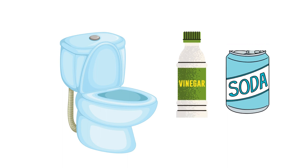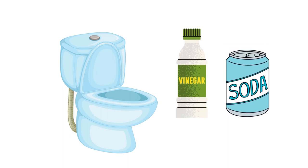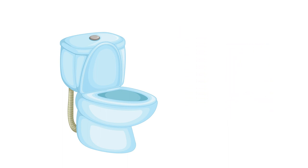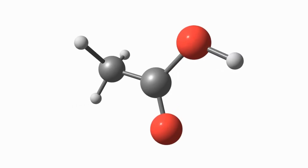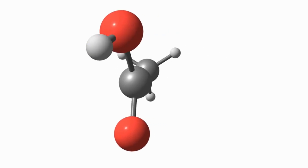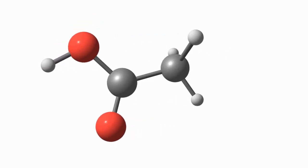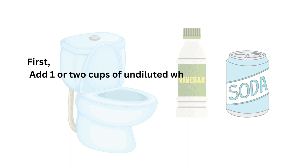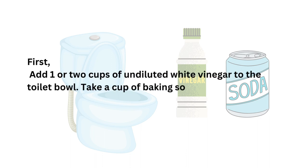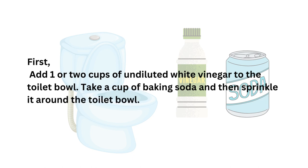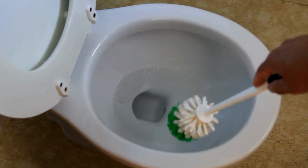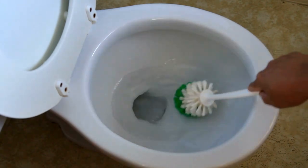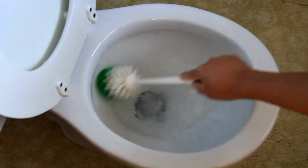Method 2: Removing Gray Sediments With Vinegar and Soda. The acidic reaction of vinegar softens the sediments, where soda cleans it from the china bowl. First, add one or two cups of undiluted white vinegar to the toilet bowl, then take a cup of baking soda and sprinkle it around the toilet bowl. After 10 to 15 minutes, take a toilet brush and scrub the toilet bowl.